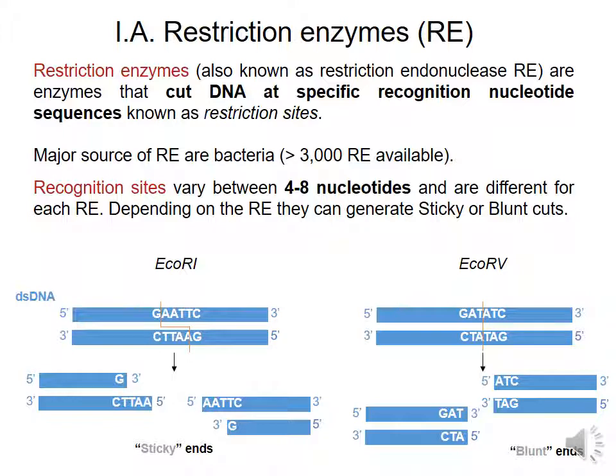The first element in recombinant DNA technology is restriction enzymes, which are enzymes that cut DNA at specific recognition nucleotide sequences known as restriction sites.